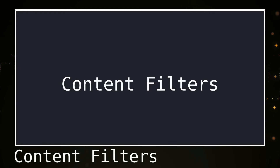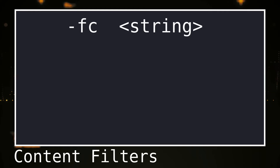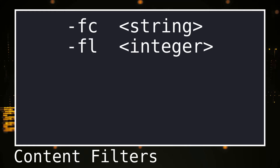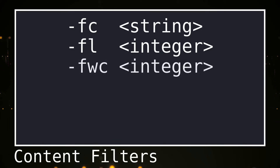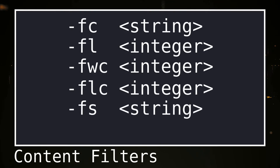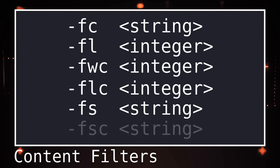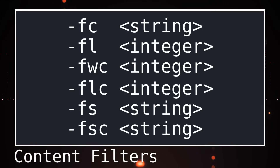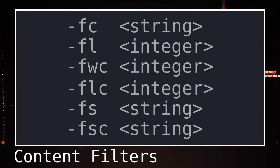By using content filters we can filter out traffic we specify — unlike the matchers which only show matching results, content filters do the opposite and remove the results we specify. The -fc flag filters status codes; the -fl flag filters content length; the -fwc flag filters word count; the -flc flag filters by line count; the -fs flag filters specific strings from results. With the -ffc flag we can filter out favicons based on the MMH3 hash generated by HTTPX.